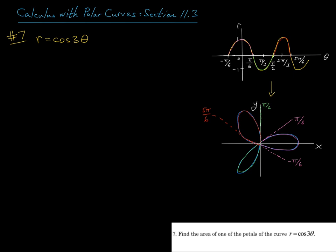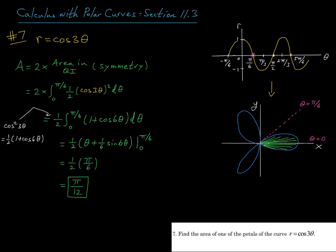And then from 5 pi over 6 on, we're just going to retrace these petals. And so we're looking at this 3-petaled curve, and we want to find the area of one of the petals. So I'll go ahead and find the area of the petal that lives in quadrants 1 and 4, so this area here in green.